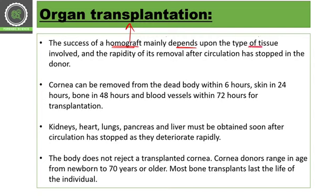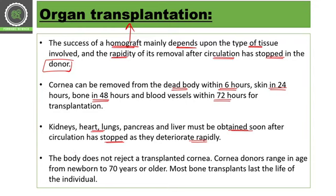The success of homograft — that is, organ transplantation — depends on the type of tissue involved and the rapidity of its removal after circulation has stopped in the donor. The cornea can be removed from the dead body within six hours of death, skin within 24 hours, bone within 48 hours, and blood vessels within 72 hours. For kidney, heart, lungs, pancreas, and liver, removal must happen soon after circulation has stopped as they deteriorate rapidly. The body does not reject the transplanted cornea, and the donor can be a newborn baby or a 70-year-old person. Most bone transplants last the life of the individual.